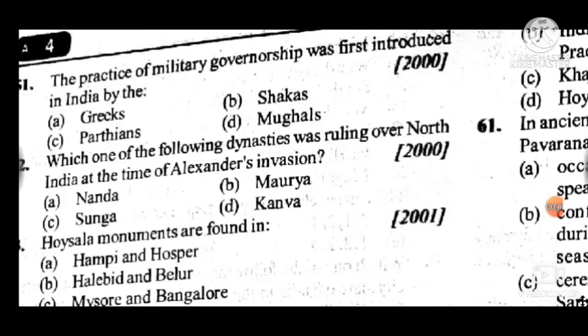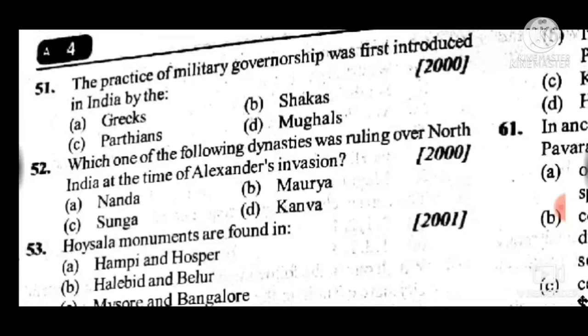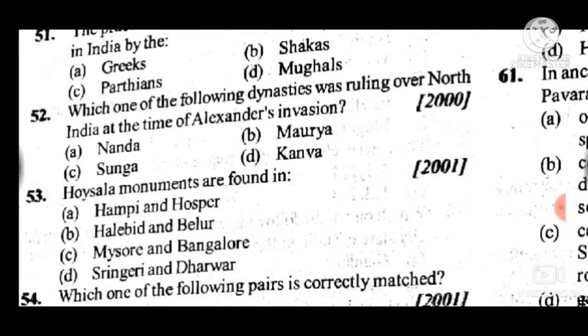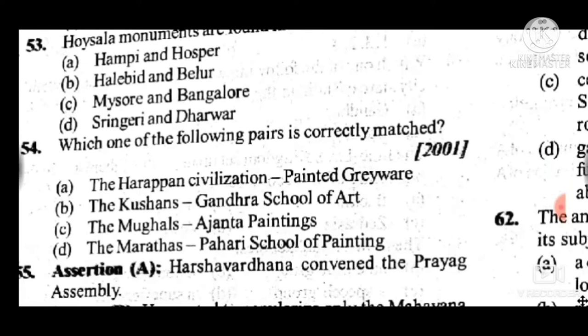Question 51: The practice of military governorship was first introduced in India by — answer is A, the Greeks. Question 52: Which one of the following dynasties was ruling north India at the time of Alexander's invasion? Answer is Nanda. Question 53: Hoysala monuments are found in — answer is B, Halebid and Belur, both in Karnataka. Question 54: Which pair is correctly matched? Answer is B, the Kushanas and the Gandhara school of art.